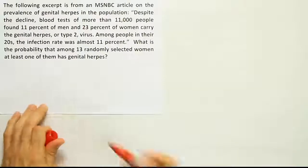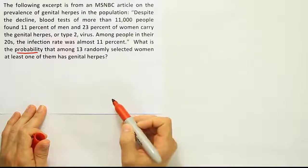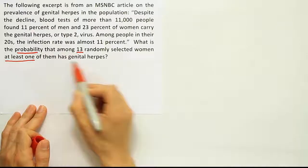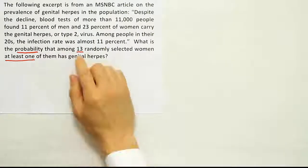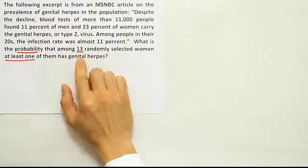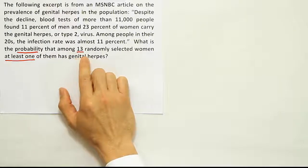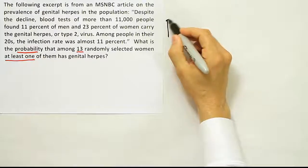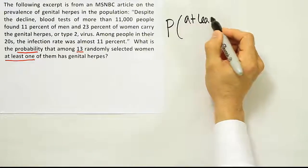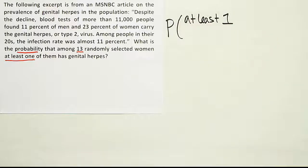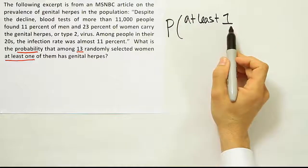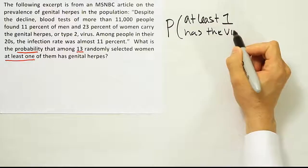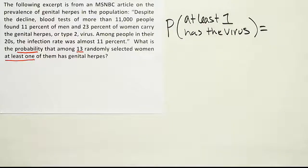When I read this problem I have to identify what technique to use. I see it's a probability problem — that's a good start. We're looking for the probability that among 13 randomly selected women, at least one of them has the virus. The fact that we're selecting more than one person means the multiplication rule is involved somewhere. We also have this 'at least one' statement, so I'll write: find the probability of at least one — this is a very classic kind of probability problem — at least one among the 13 women has the virus.